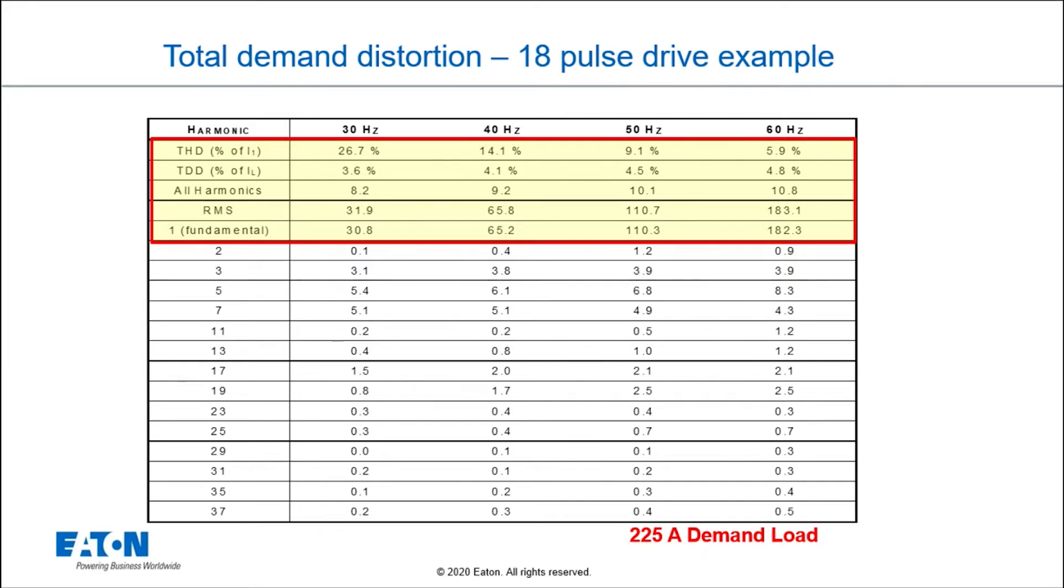A lot of people panic when they buy an 18-pulse drive and say, oh no, my distortion is very high. But in fact, your percent distortion is significantly higher because the actual 60 hertz is low at that point. But the actual amps of harmonic, the current that's doing the damage, increases with load. It just doesn't increase at the same rate as the 60 hertz current.